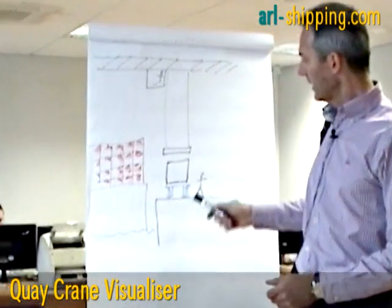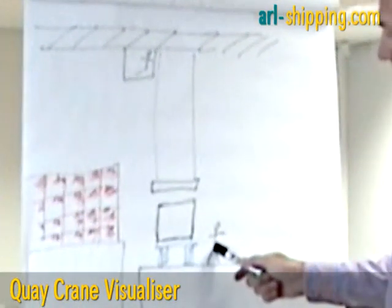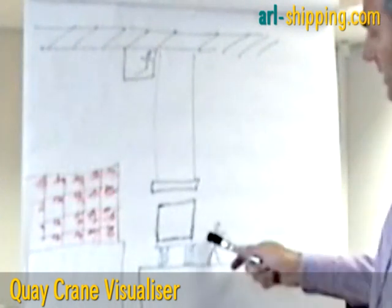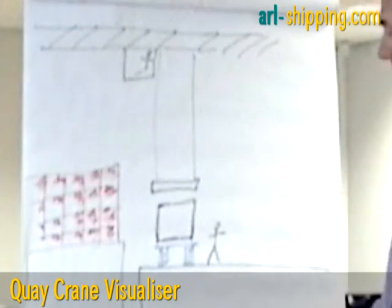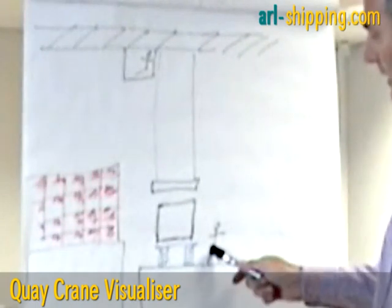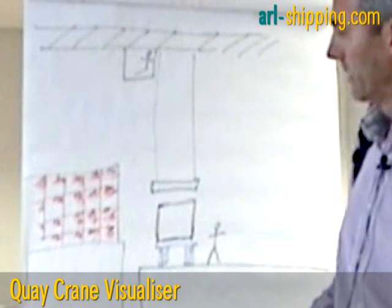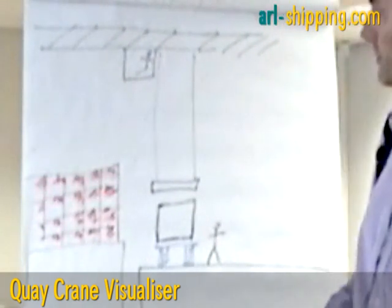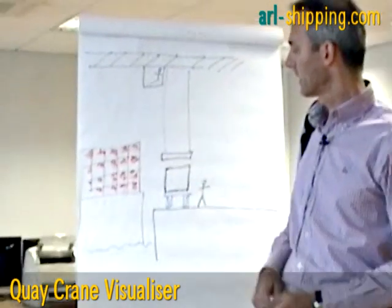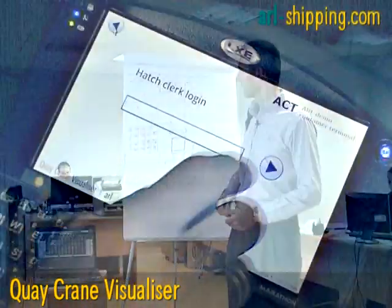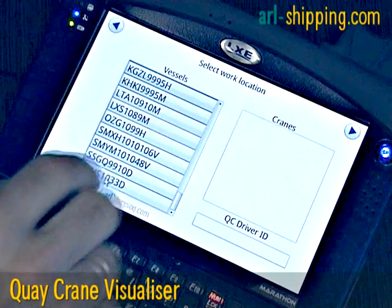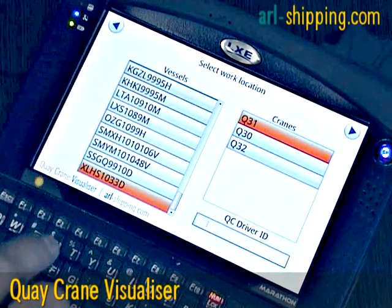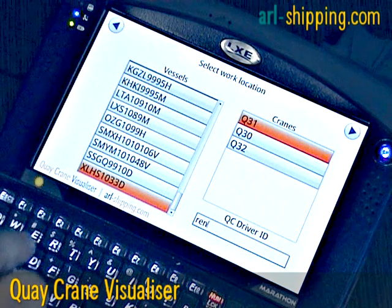The way it works is that we provide this new graphical tool to the people working under the crane. That's primarily the hatch clerk on the yard side, as we see here, and also possibly to clerks working onboard the vessel, but also mounted in the Keycrane cabin with the Keycrane driver on the screen, to some extent replacing the audio interaction between the hatch clerk and the Keycrane driver.